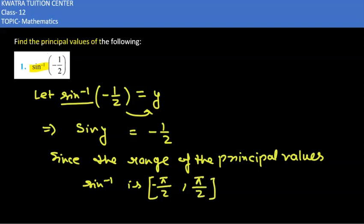Therefore, y belongs to the interval negative π by 2 to π by 2, and this will lie in the fourth quadrant.